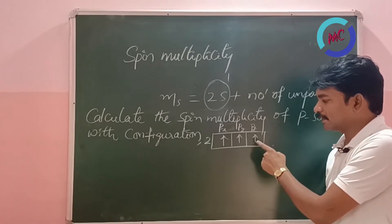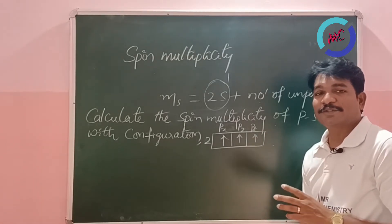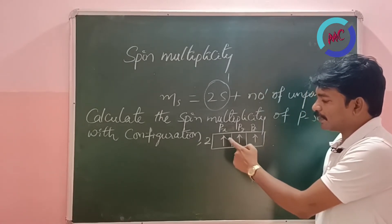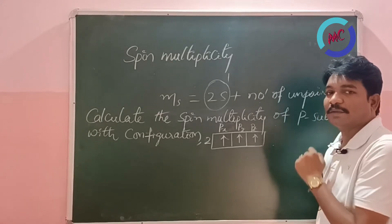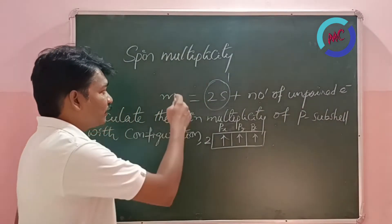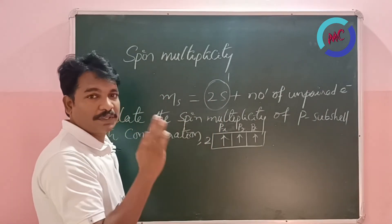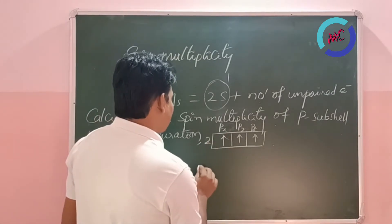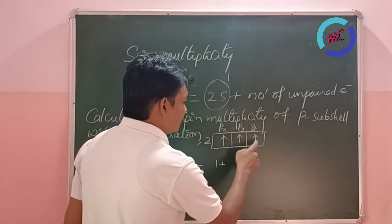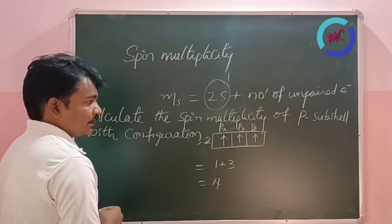When filling electrons in the box method, we have to follow Hund's rule — electrons start pairing only after filling one electron in each degenerate orbital. Since 2S always equals 1, the spin multiplicity = 1 + 3 unpaired electrons = 4.